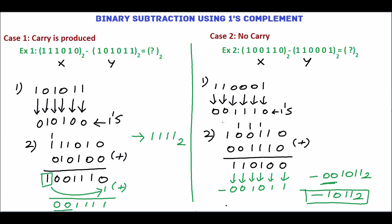We will summarize the steps. First, find the 1's complement for the subtrahend. Then add first number and 1's complement of the subtrahend. If carry is produced in the addition, add the carry with the LSB of the sum. If there is no carry, take 1's complement for the sum and assign the negative sign.